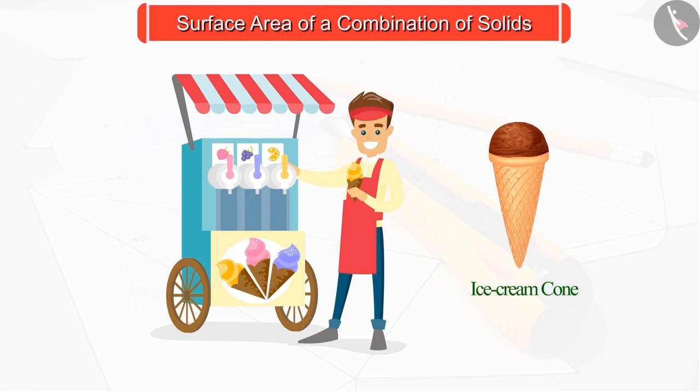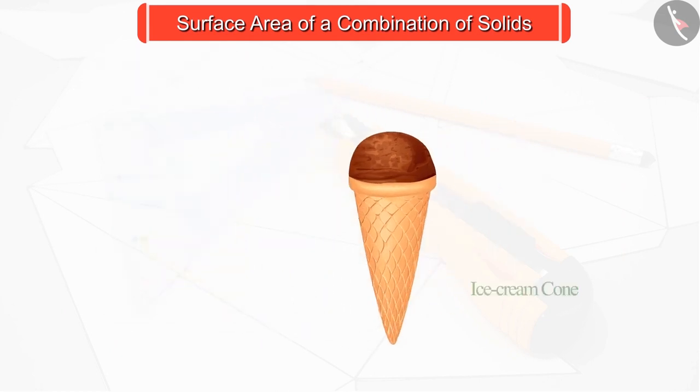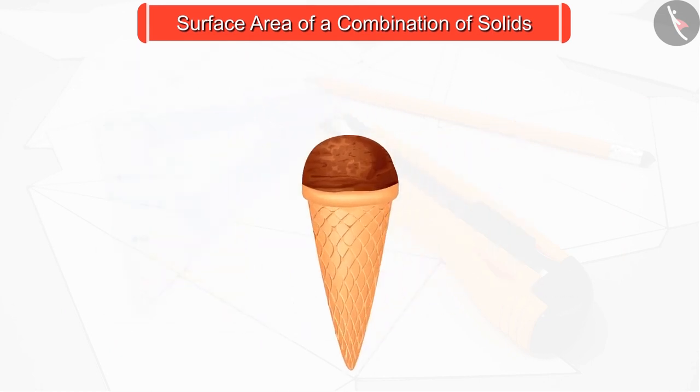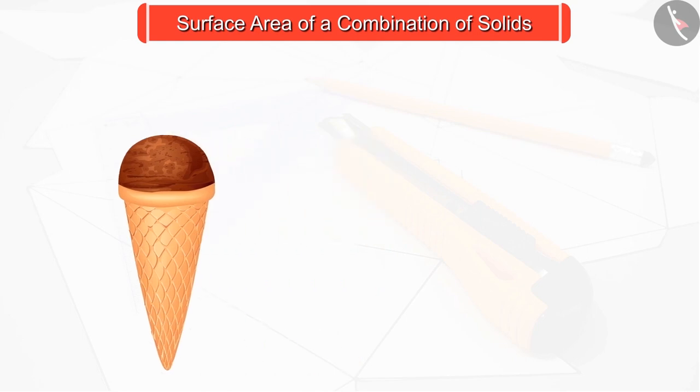Look at this ice cream cone carefully and identify the combination of figures that make the cone. Let's draw its shape by looking at it. We can see that it is formed by combining two figures.